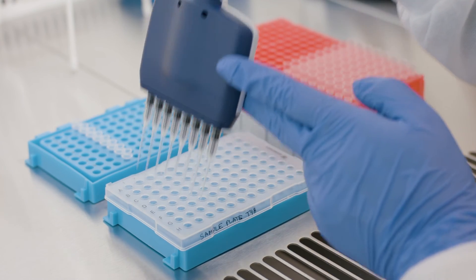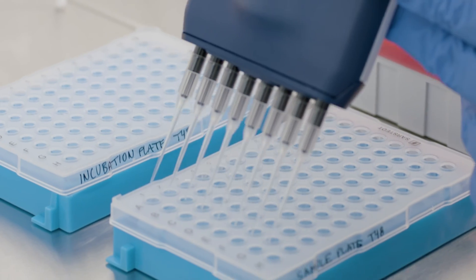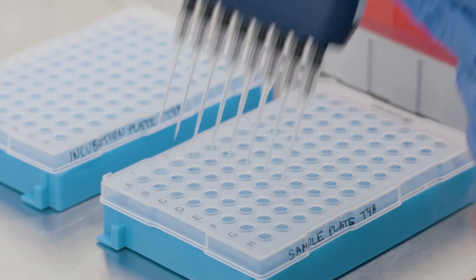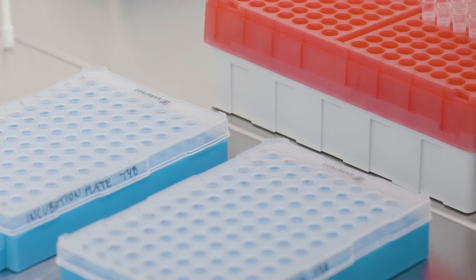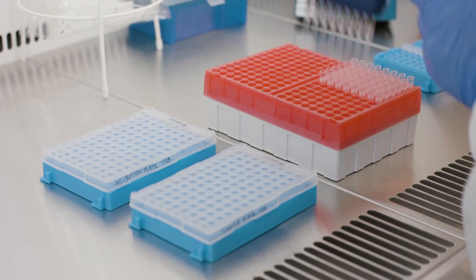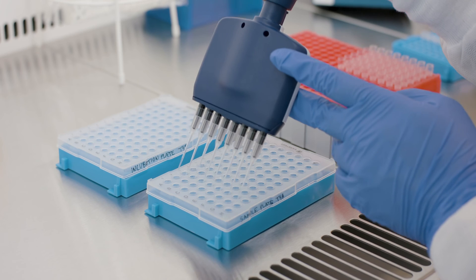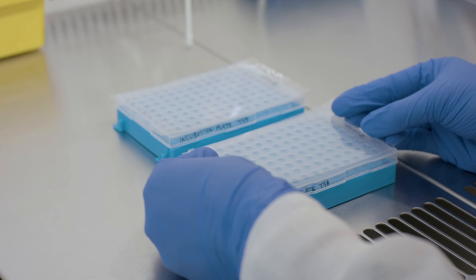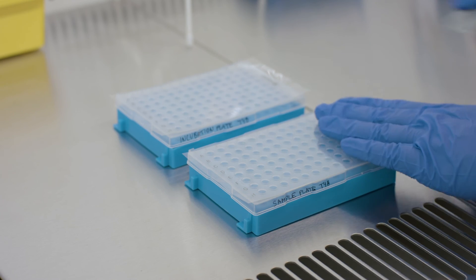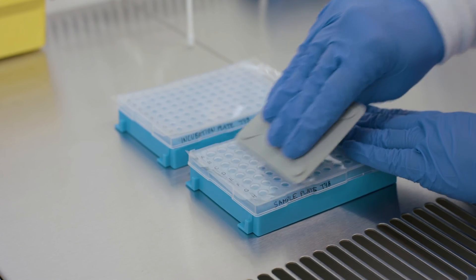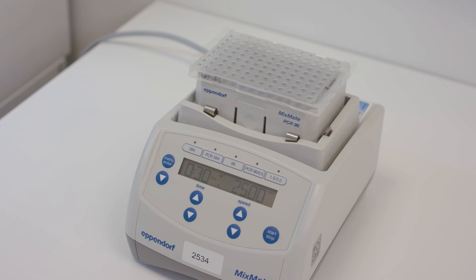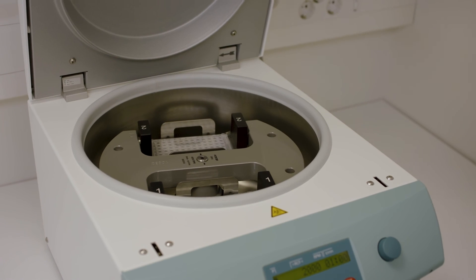Transfer 7.2 microliters of the detection mix to each well of the first 6 columns of the sample plate by using reverse pipetting. Transfer 2.8 microliters of the extension PCR products in the incubation plate to the sample plate using a multi-channel pipette and forward pipetting, changing tips between each column. Seal both the sample plate and the incubation plate with adhesive plastic film. Vortex and spin down the sample plate before proceeding.